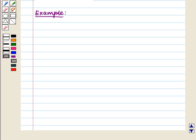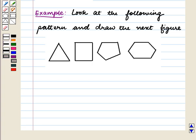Let us consider one more example. Look at the following pattern and draw the next figure. If we observe all the figures, we see that the first figure is a triangle with 3 sides, the second figure has 4 sides, the third figure has 5 sides, and the fourth figure has 6 sides.